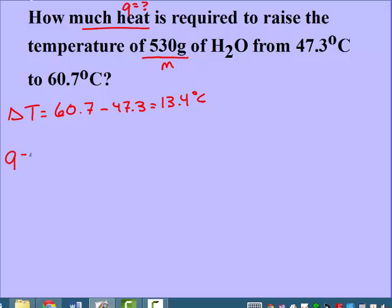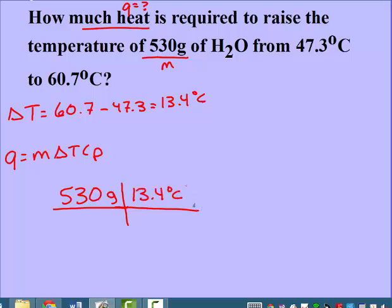From 47.3 to 60.7, so delta T is final minus initial, for 13.4 degrees Celsius. So write your equation. We're solving for Q, so we don't need to rearrange. We can just plug everything in: our mass, our change in temperature, and then our Cp.